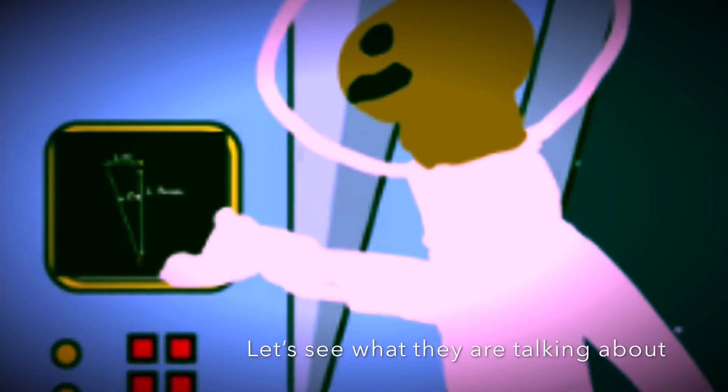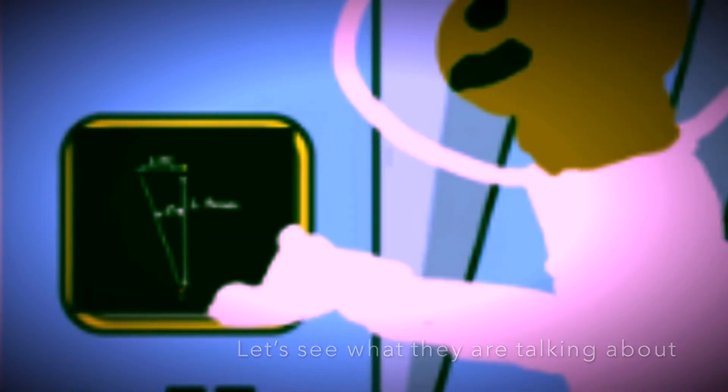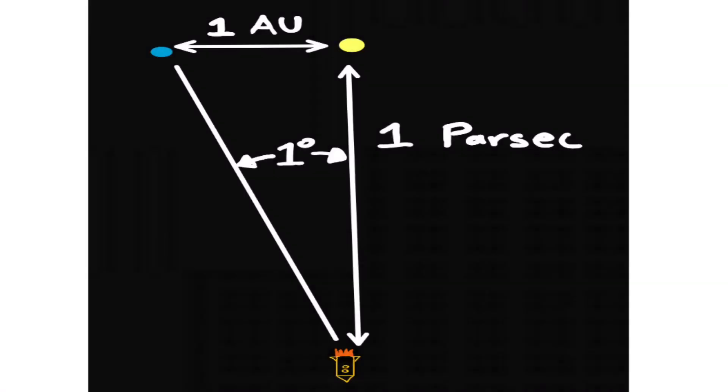They were one parsec away from the sun, and one angle of deviation would lead them to Earth — which is what a parsec is.